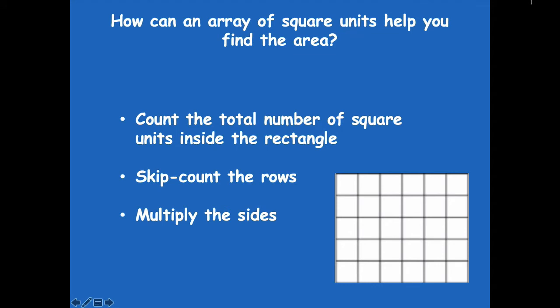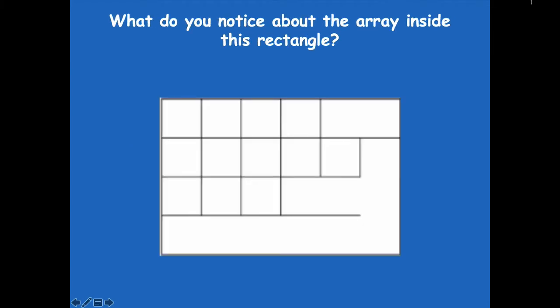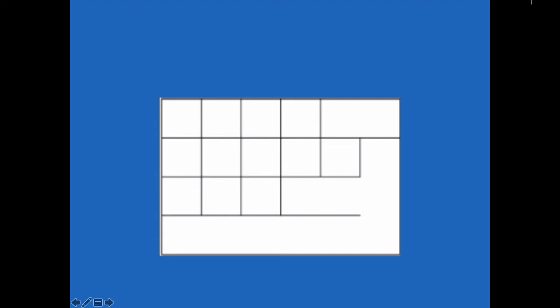What do you notice about the array inside this rectangle? What's wrong with it? Yeah, it's missing some of the parts. It looks like someone went in and took an eraser and was messing with us and erased some of the lines. Oh goodness!